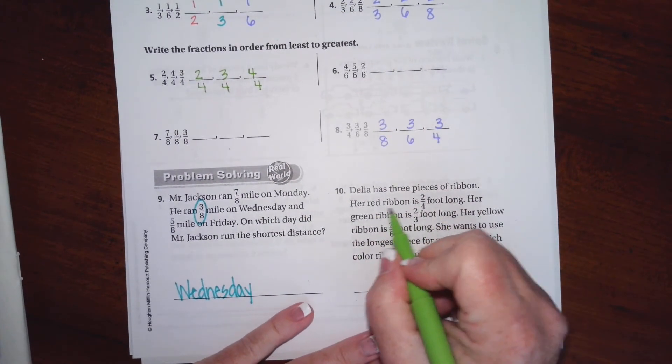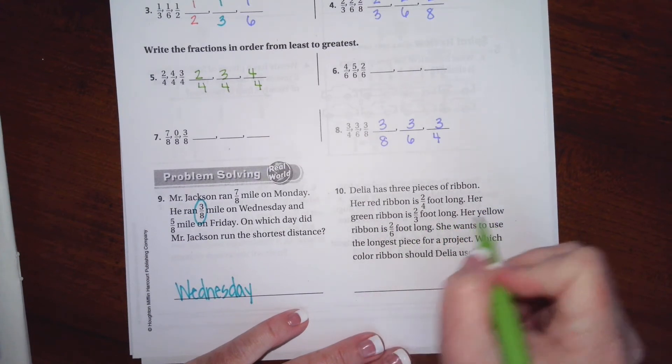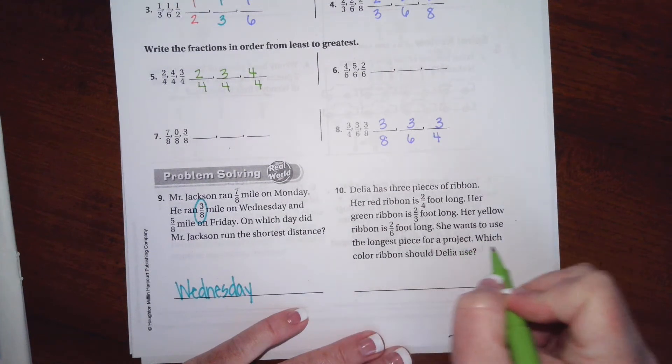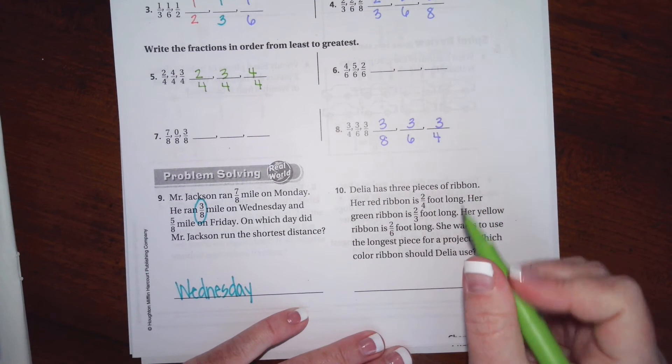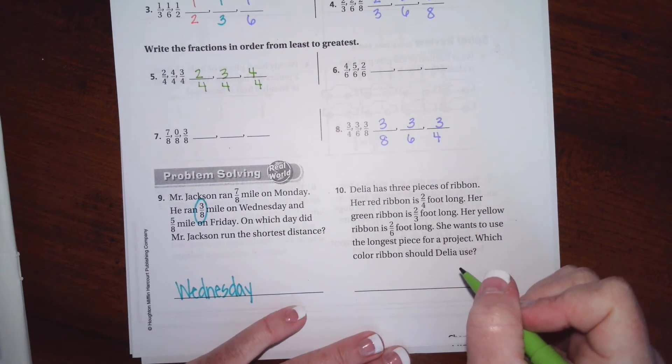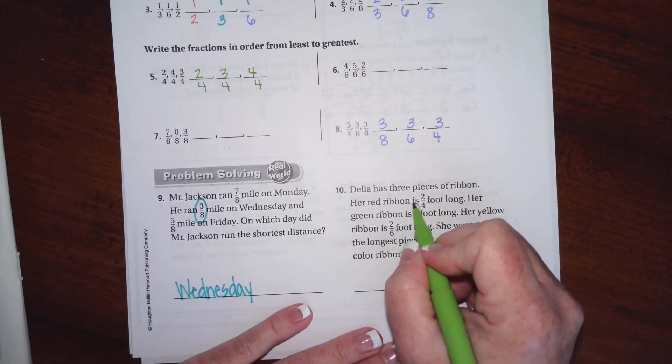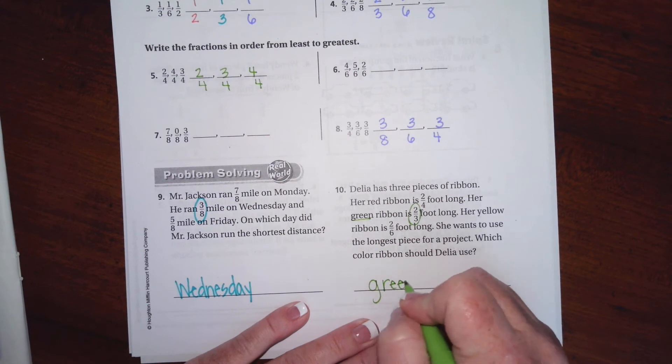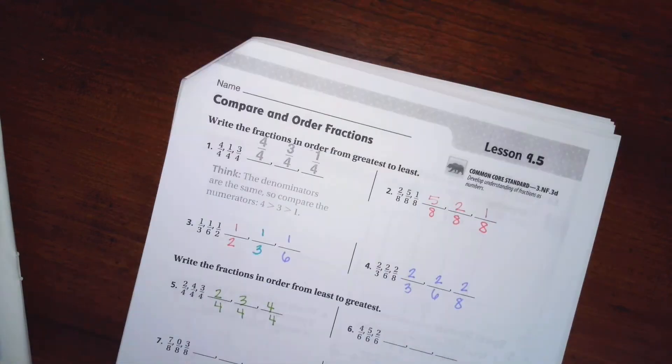Delia has three pieces of ribbon. Her red ribbon is two-quarters foot long, her green ribbon is two-thirds foot long, and her yellow ribbon is two-sixths foot long. She wants to use the longest piece for a project. So remember when the top numbers are the same, we're looking for the smallest bottom number for the biggest. The bottom number is a three right there, so it's going to be green.